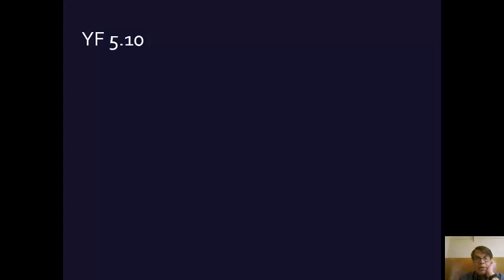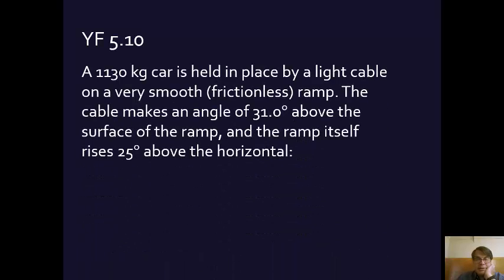I thought I would do one problem from the back of the book, an even problem, Young and Friedman's Chapter 5, Problem 10. Here's the problem. It's a common one you'll find online. A 1,130-kilogram car is held in place by a light cable on a very smooth frictionless ramp. The cable makes an angle of 31 degrees above the surface of the ramp, and the ramp itself rises 25 degrees above the horizontal.